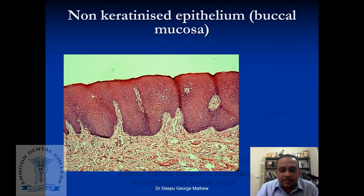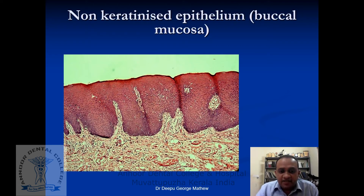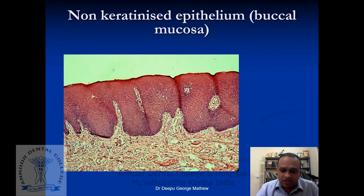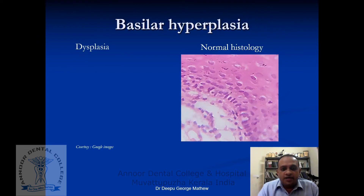This is a normal non-keratinized epithelium that you see on the buccal mucosa. The epithelial tissue is separated from the underlying connective tissue — you can make out the clear separation between the superficial epithelium and the underlying connective tissue. Keep this as a reference for what normal should appear like.